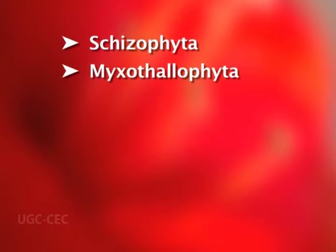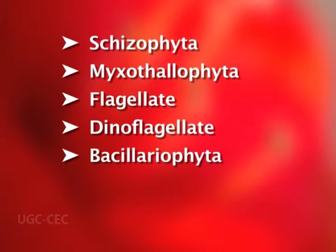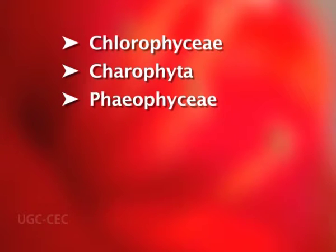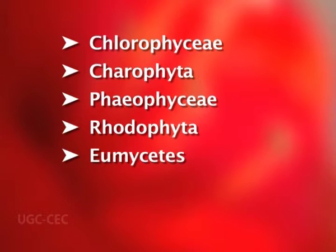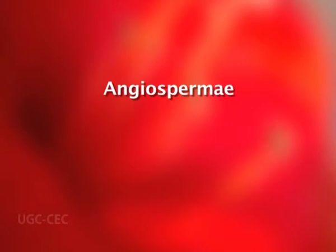The 14 divisions are: Schizophyta, Myxothallophyta, Flagellatae, Dinoflagellatae, Bacillariophyta, Conjugatae, Heterocontae, Chlorophyceae, Charophyta, Phaeophyta, Rhodophyta, Eumycetes, Archegoniatae, and the last one — Embryophyta — which includes seed plants. The division Embryophyta is subdivided into two subdivisions: Gymnospermia and Angiospermia.